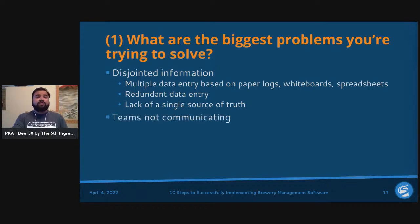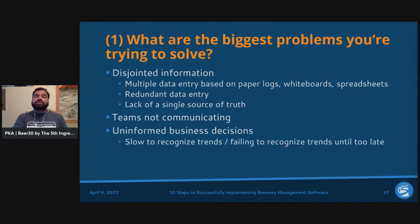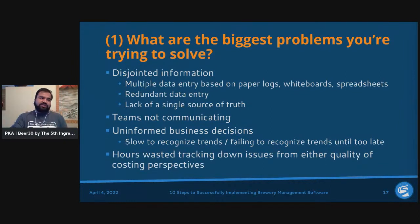Teams not communicating is also really important — without a single source of truth, people are sending emails, texts, and Slack messages and things get totally mismanaged. Uninformed business decisions follow: if you don't have automated systems or real-time visibility into trends, you won't recognize problems until they're too late, leading to bigger issues in the overall process.